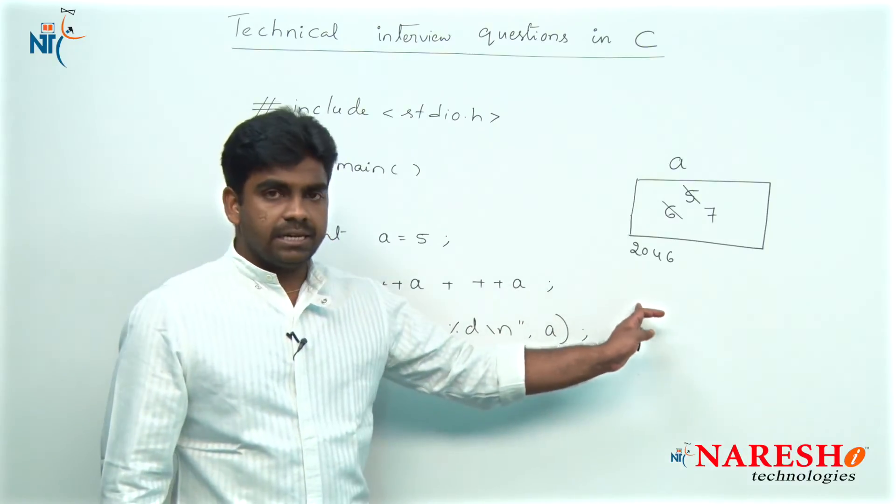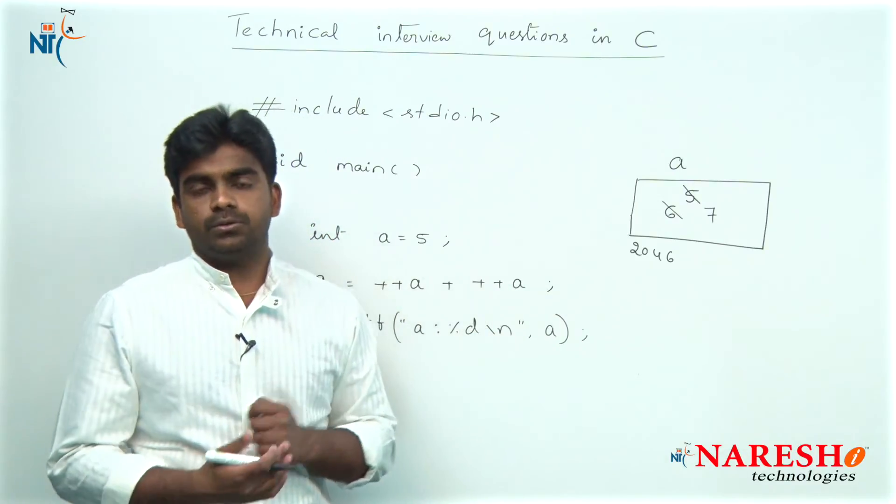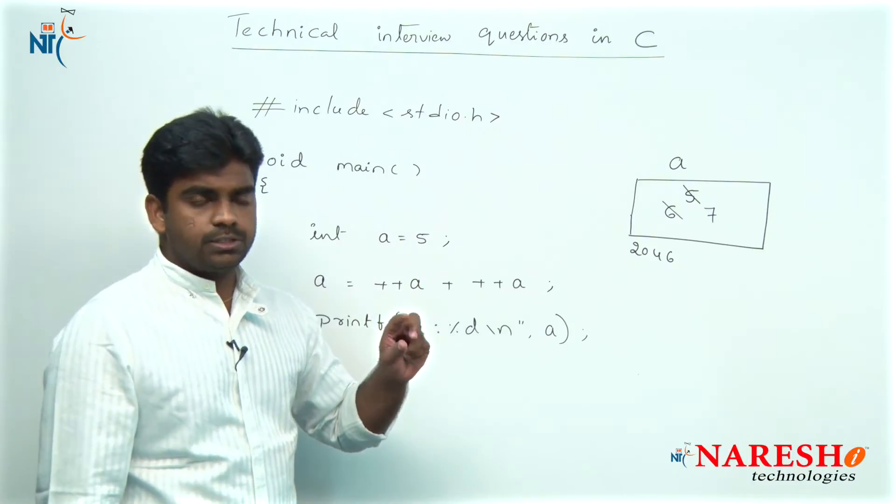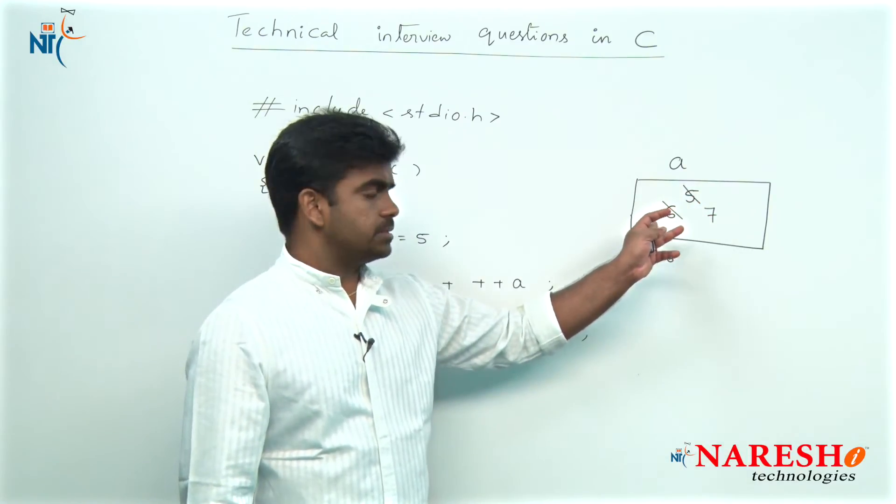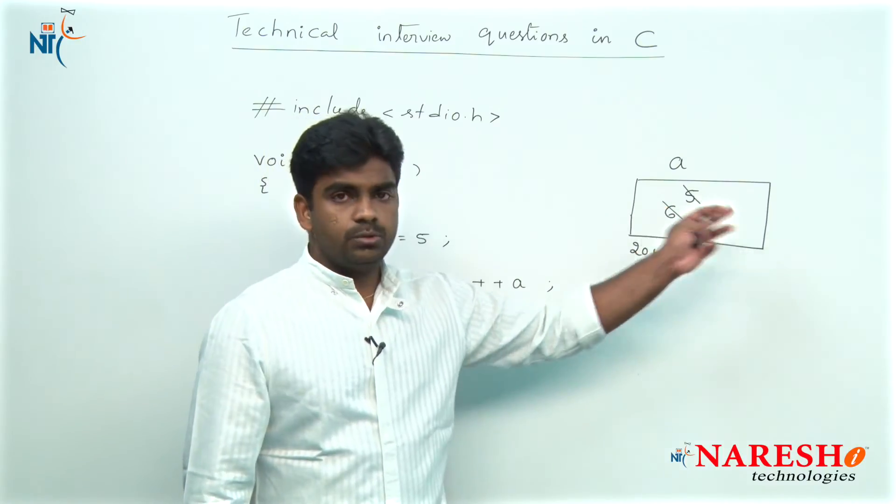Now here, no more increments and decrements, now substitute the values. What is the value of a? It is not 5, it is not 6, because 5 already modified as 6 and 6 already updated to 7.